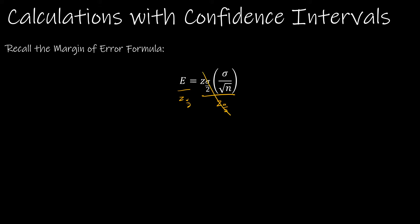And on the right side, those two cancel. And on the left side, I have E divided by Z of alpha over 2. And on the right side, I'm left with sigma divided by the square root of n.